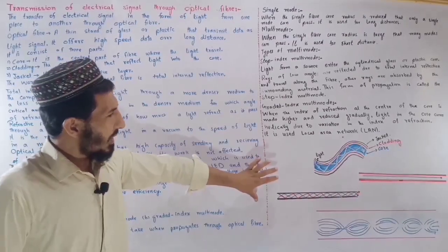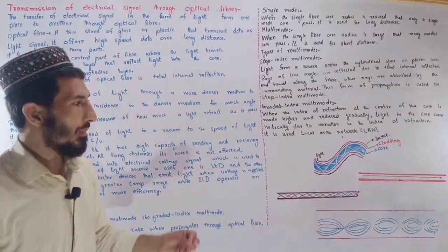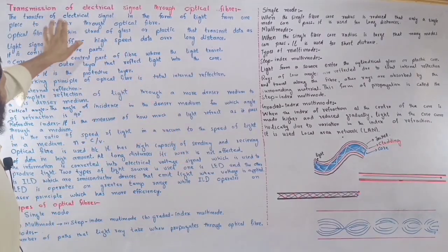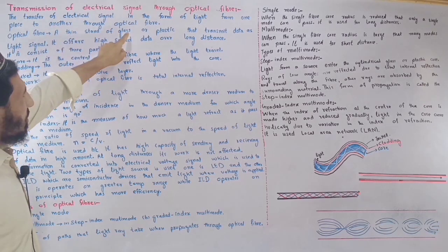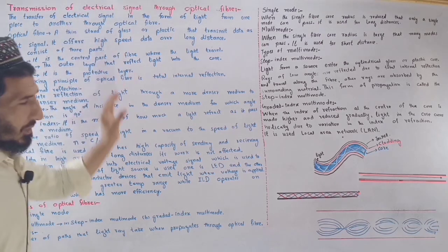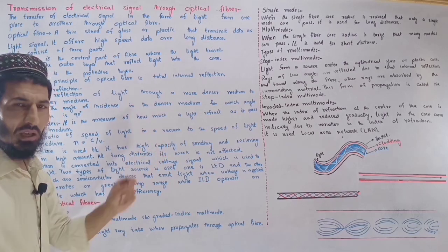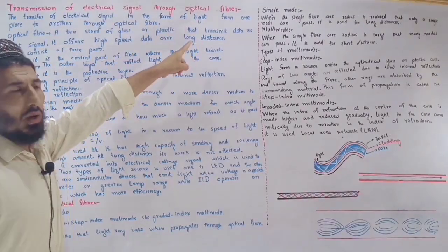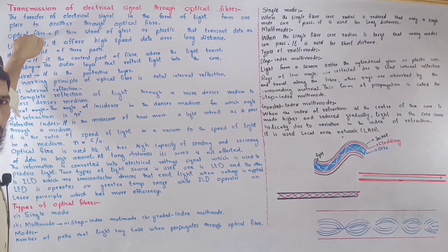The optical fiber transfers data. The working principle is the transfer of electrical signal in the form of light from one place to another through optical fiber. The electrical signal is transferred in the form of light through optical fiber.